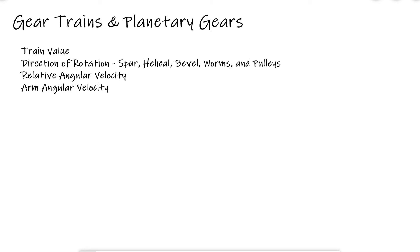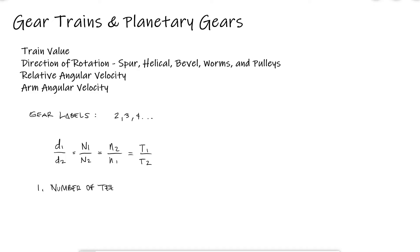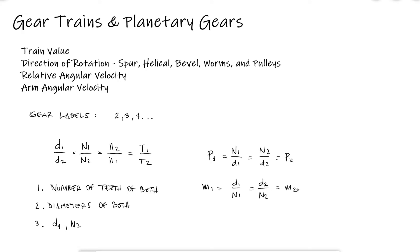You might have noticed from the example we covered during the last main video that we labeled our gears starting with a 2. Since the first driving gear is not moving on its own but most probably due to it being located on a rotating shaft, we usually set aside the number 1 for that first element of rotation. From the relationships we derived, we know that if we know the number of teeth of two mating gears, the diameters of two mating gears, or one of the diameters and the number of teeth of the other, and the diametral pitch or module, we can find the ratio between their rotating speeds.